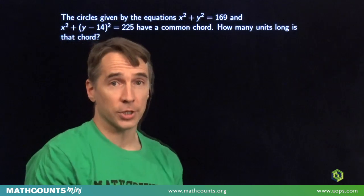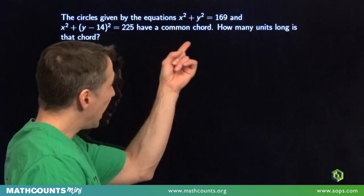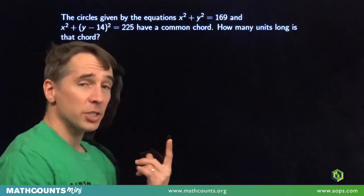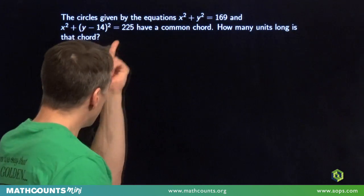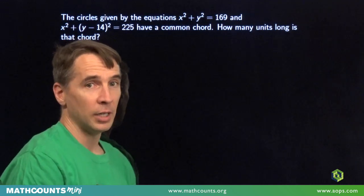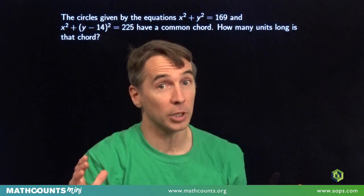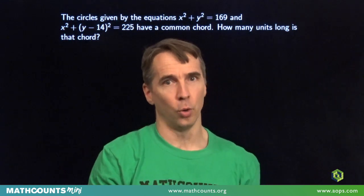Now in this problem we have a couple circles given by the equations x squared plus y squared is 169, and x squared plus the square of y minus 14 is 225. Now these two circles, they intersect. They have a common chord. We have to find the length of that chord.